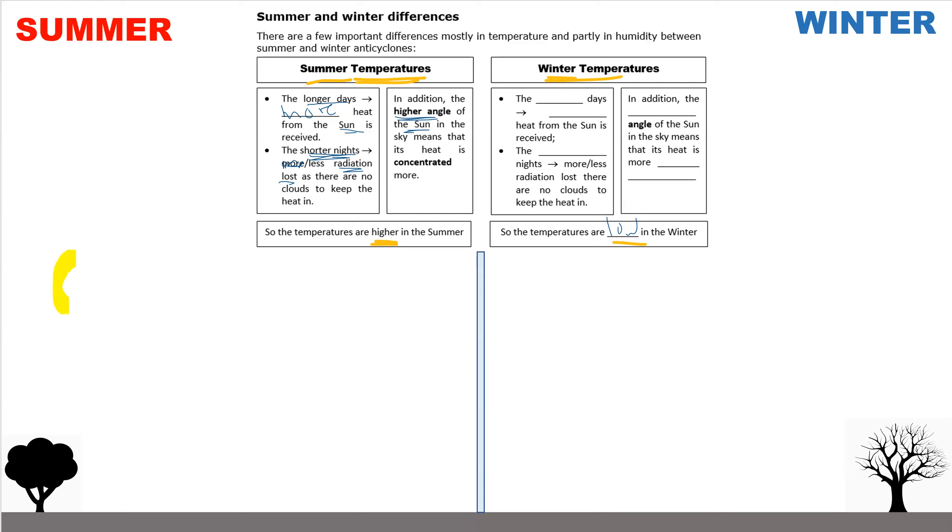In the summer, the sun is higher in the sky, which means that the heat energy that comes down from the sun comes down at quite a steep angle and is concentrated more.